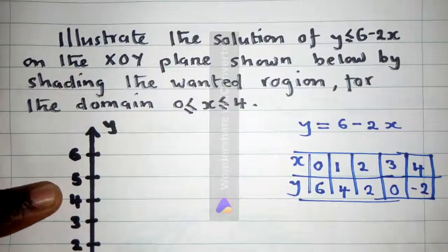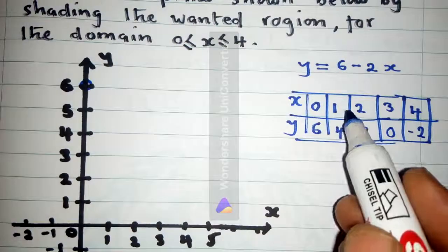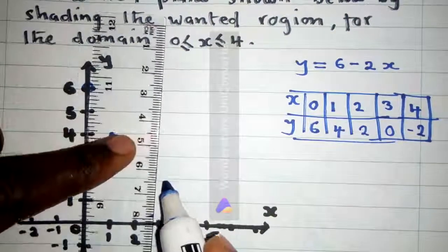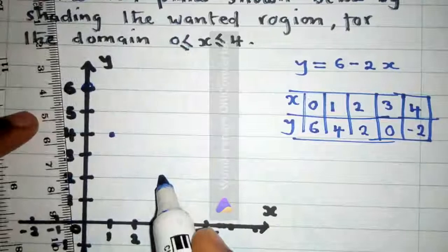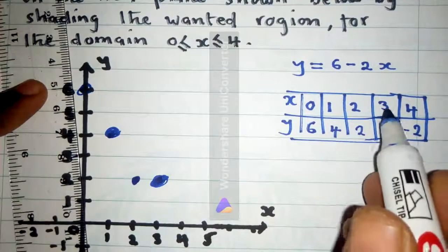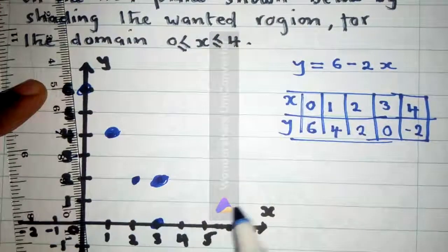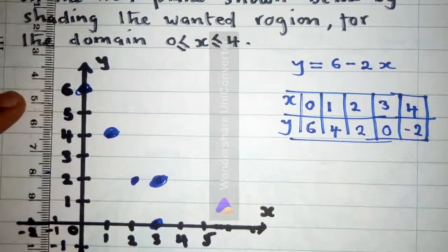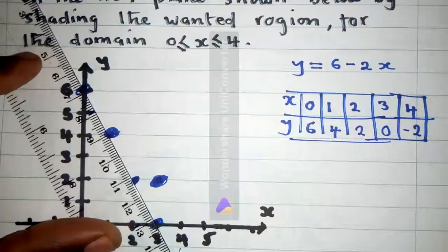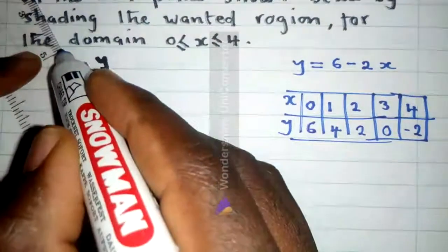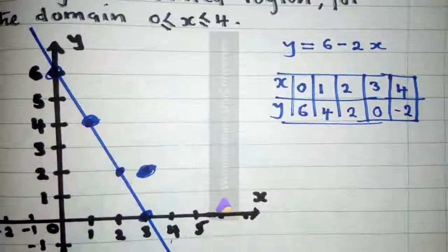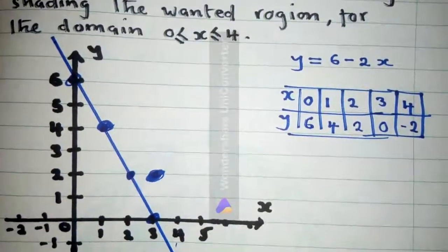So these are the coordinates — try to plot them. The point (1, 4): 1 is here, 4 is here. Then (2, 2) is somewhere here. Then (3, 0) is here. Then (4, negative 2) — negative 2 is here, 4 is here. So you join these coordinates or these points. You have a line like this. We've done our line over here.